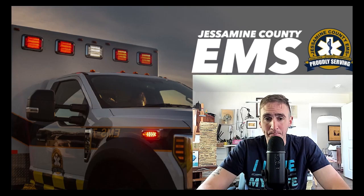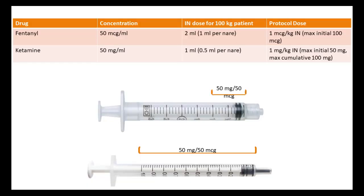Let's do some math. Let's say we want to give intranasal ketamine to a 100 kilogram patient. Our intranasal ketamine dose is 1 mg/kg, so that would be 100 milligrams — that's 2 milliliters. However, the max initial dose is 50 milligrams. So that would be 25 milligrams per nare, or 0.5 ml per nare, because the concentration is 50 milligrams per milliliter.